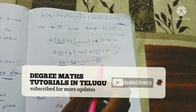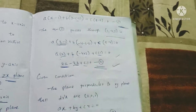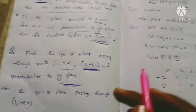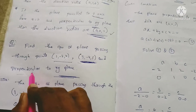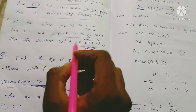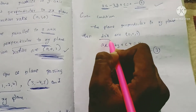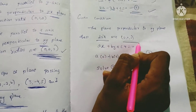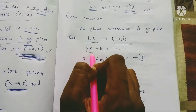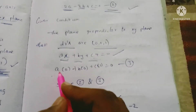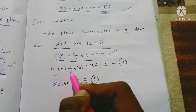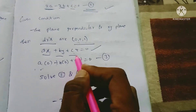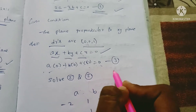The given condition is that the plane is perpendicular to the x-y plane. The direction ratio for the x-y plane is 0, 0, 1. So the direction ratios a, b, c of the plane's normal satisfy: a(0) + b(0) + c(1) = 0. This gives equation 3: c = 0.